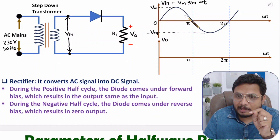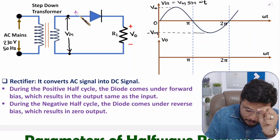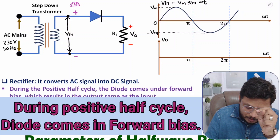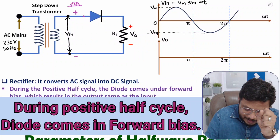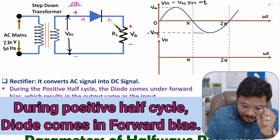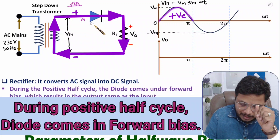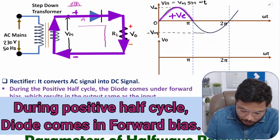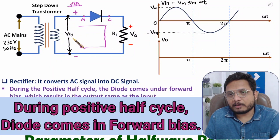During the positive half cycle, the anode terminal of the diode is positive with respect to the cathode. This means the diode comes into forward bias. As the diode is in forward bias, current flows through the loop, and the output voltage VO is the same as VIN.